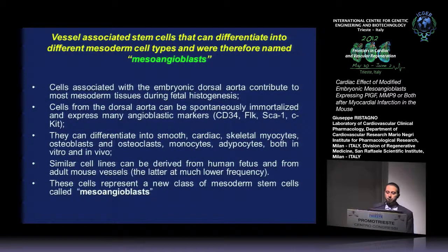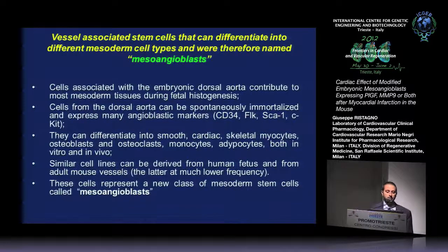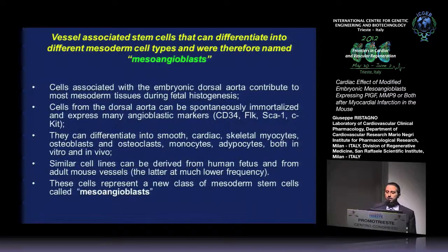This study was not focused on characterizing the cells because the MAPs or mesangioblasts have been already well characterized and data are published by all the previous studies performed by Dr. Kosu together with Dr. Latini. Here I summarize some of the characteristics of the cells that we used. The embryonic mesangioblasts are derived from the embryonic dorsal aorta. They are spontaneously immortalized and they express many angioblastic markers such as CD34, FLIC, or C-kit.